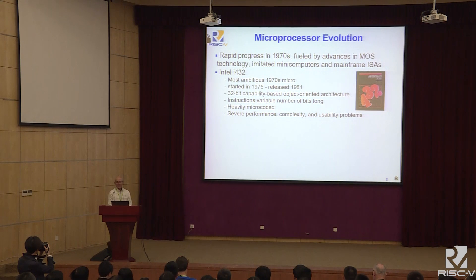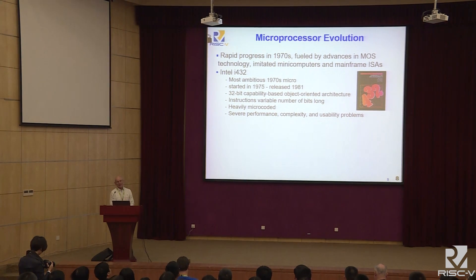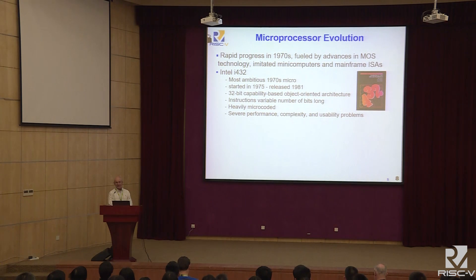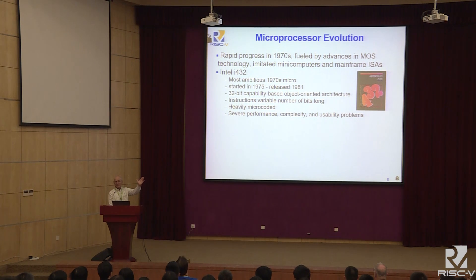Gordon Moore of Moore's Law, who was president of Intel, had a friend at Digital Equipment Corporation — Gordon Bell, who made the VAX — and they would compare notes. Moore realized that with Moore's Law, they'd quickly go from 8-bit to 16-bit to 32-bit microprocessors. His insight around 1973–74 was that whatever instruction set they designed next, they'd be stuck with for the rest of the company's life. So he knew they had to get the next one right.